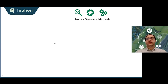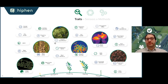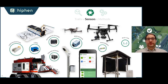Traits are the combination of a sensor and methods. When we speak about traits, it's all we've already described and much more. Those traits will also depend on the phenological stage of your plants as they evolve. For instance, you will have tillering in wheat where you have first the number of plants that emerge, but that won't be completely linked to the number of wheat ears.